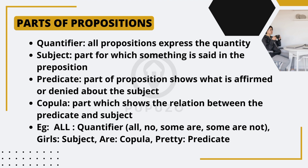In summary, propositions come in four types: universal affirmative, universal negative, particular affirmative, and particular negative. Each type conveys a distinct meaning and is represented by specific symbols. Additionally, propositions consist of four key parts — the quantifier, subject, copula, and predicate — which work together to express their intended meaning.